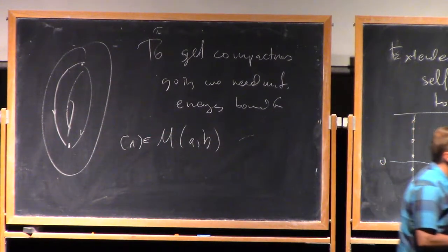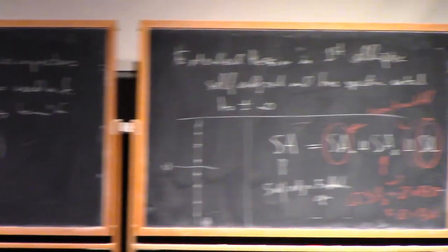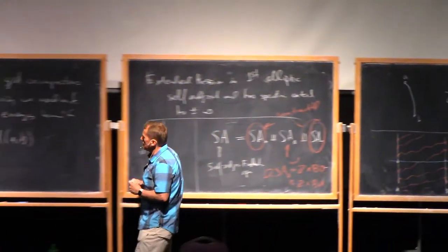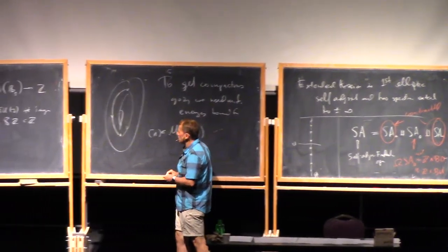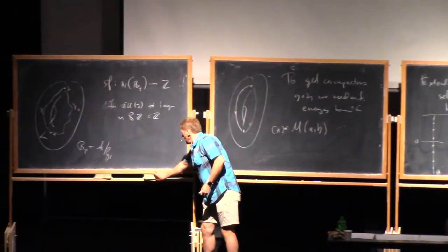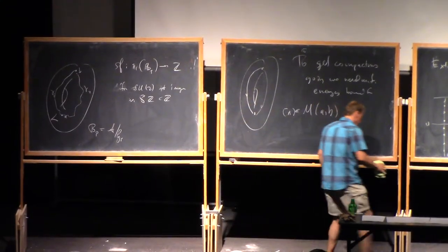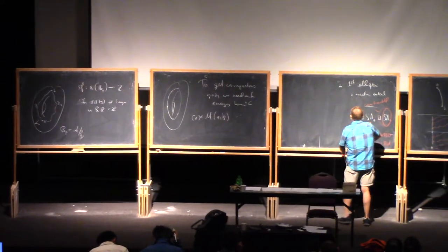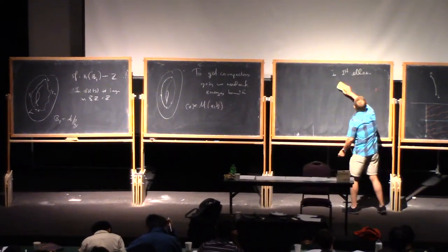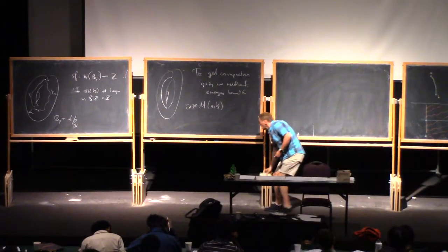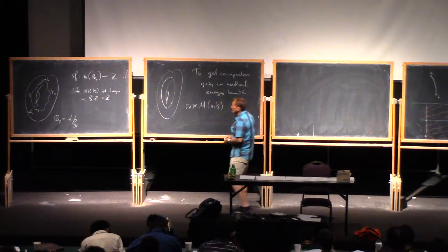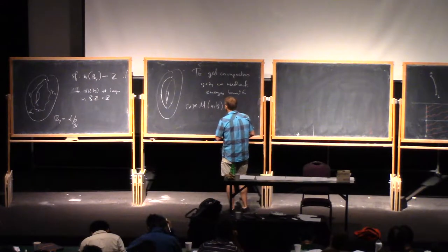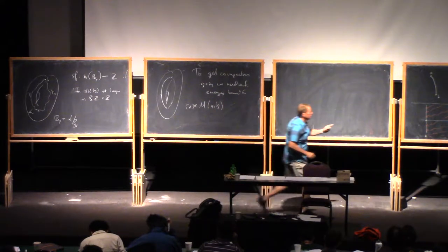We need... Uniform energy bound... For... Uh... You know, connections in... In M-A-B. But, um... Uh... Yeah. We... There's some little way to win here, which is quite remarkable. Um... This is sort of Floor's... One of Floor's... Basic observations.